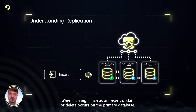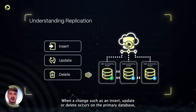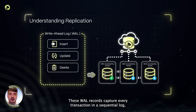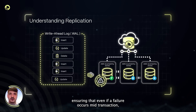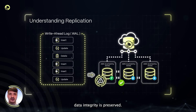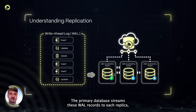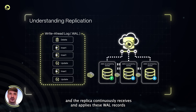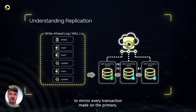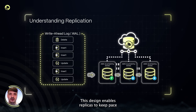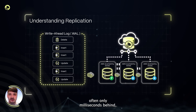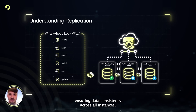When a change, such as an insert, update, or delete occurs on the primary database, it's immediately recorded in something called a write-ahead log, or WAL. These WAL records capture every transaction in a sequential log, ensuring that even if a failure occurs mid-transaction, data integrity is preserved. The primary database streams these WAL records to each replica, and the replica continuously receives and applies these WAL records to mirror every transaction made on the primary. This design enables replicas to keep pace with the primary with minimal delay, often only milliseconds behind, ensuring data consistency across all instances.